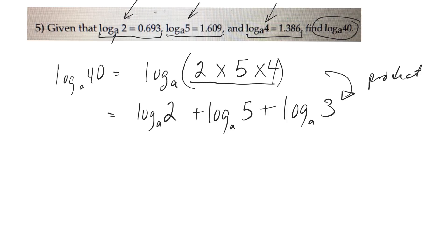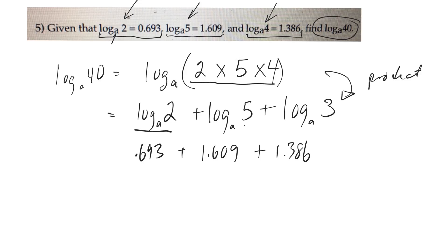In the question, they actually tell me what log base a of 2 is — it's 0.693. Log base a of 5 is 1.609, and log base a of 4 is 1.386. Then I just have to add those numbers up. I don't have a calculator close, but you get the idea.